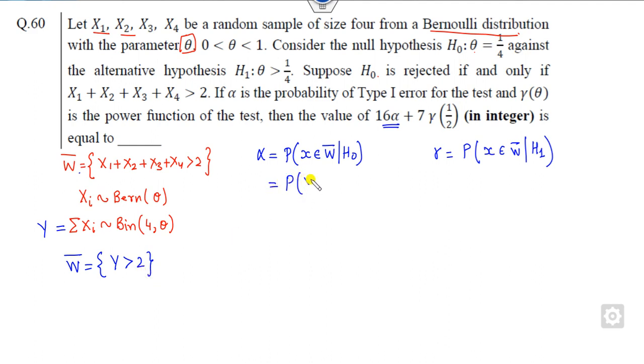So I can substitute this value here. This is the probability y > 2. What is H₀? θ is 1/4. Now y, n is 4, so you can write this as y = 3 and y = 4.